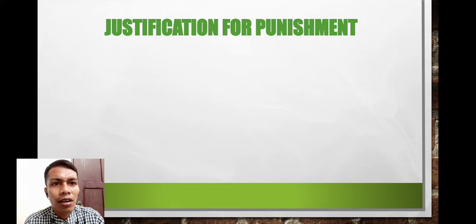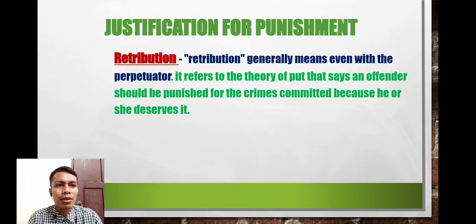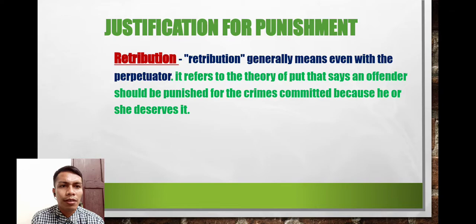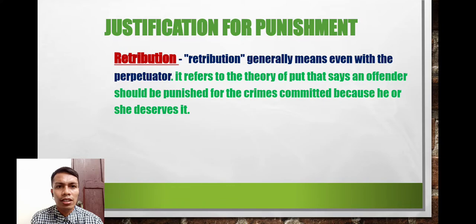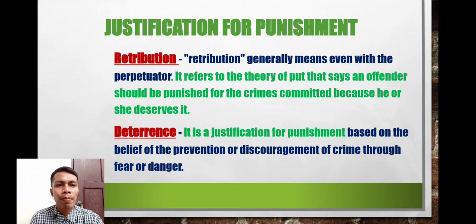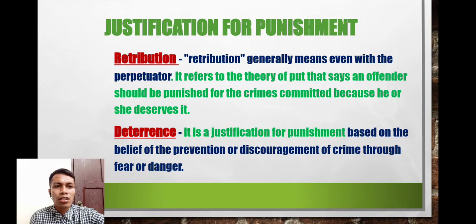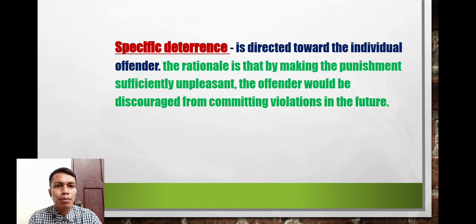The justifications for punishment include: retribution, which generally means that the perpetrator — the offender — should be punished for the crimes committed because he or she deserves it. Deterrence is the justification for punishment based on the belief in the prevention or discouragement of crime through fear or danger.